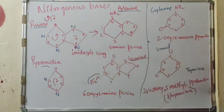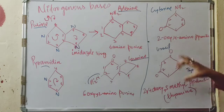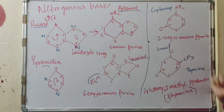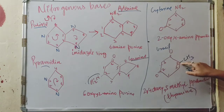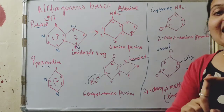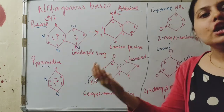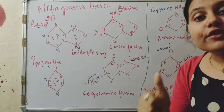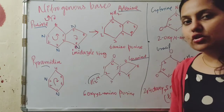Coming to thymine and uracil: this is the structure of uracil. If you add a CH₃ group at the fifth carbon, this will become thymine, because thymine is nothing but 5-methyl-uracil. The name of thymine itself is 5-methyl-uracil — when you add a CH₃ group to the fifth carbon, that compound is known as thymine.